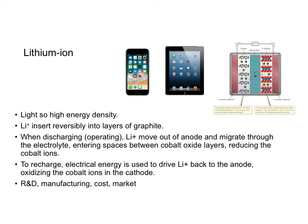The lithium-ion battery — I put in a phone, an iPad, and a picture of a typical lithium-ion battery. These batteries are very light and because of that they have a high energy density. A lithium ion can insert reversibly into layers of graphite. When your battery is discharging, the lithium cations move out of the anode, migrate through the electrolyte, enter spaces between cobalt oxide layers, and reduce the cobalt ions. When you plug it in to recharge, electrical energy from the outlet drives the lithium ions back to the anode and oxidizes the cobalt cations in the cathode.